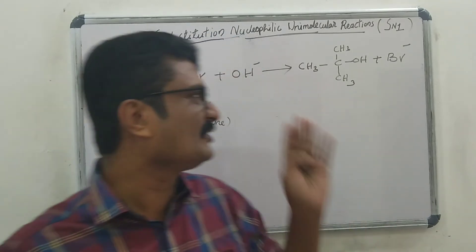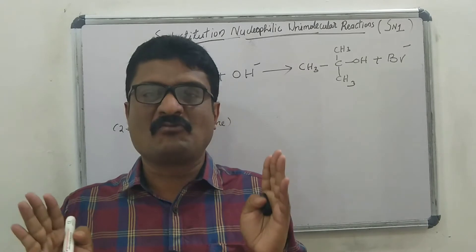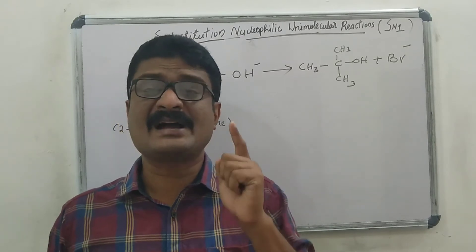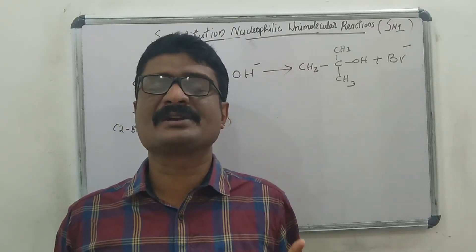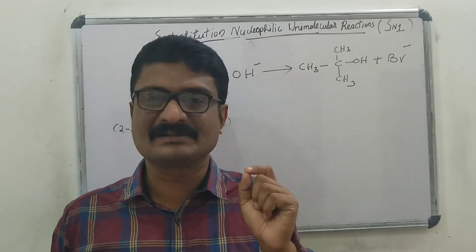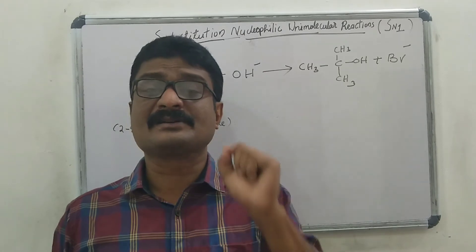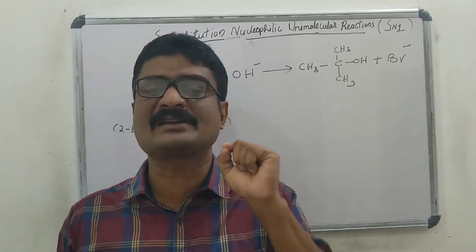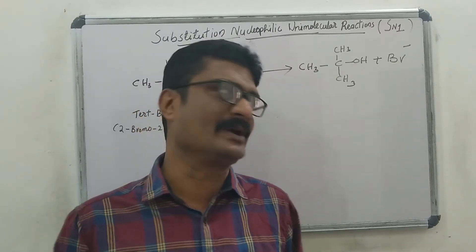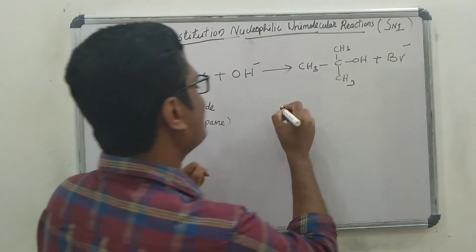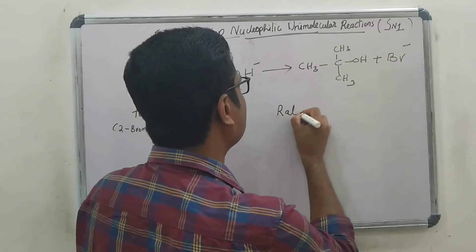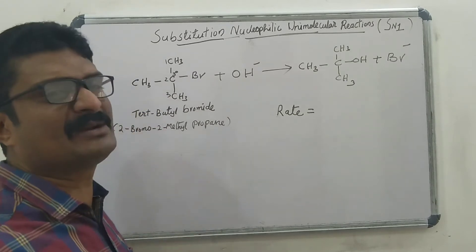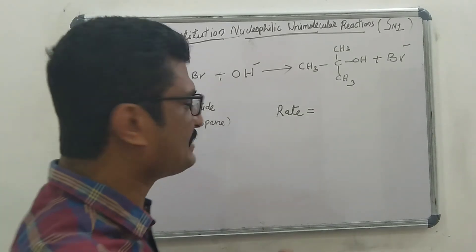The order of this reaction is 1, and the reaction rate depends on the concentration of only one reactant. That is, the rate of reaction depends on only the concentration of the alkyl halide, that is tertiary butyl bromide.